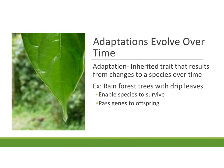Our eighth characteristic is that adaptations evolve over time. An adaptation is an inherited trait that results from a species changing over lots of time and many generations. For example, a leaf in the rainforest has developed a drip tip — at one point it was probably more rounded where water could pool, but over time it adapted to let water drip off, enabling that species to survive. When it survives, it passes its genes to offspring, which is how adaptations can evolve over many generations.